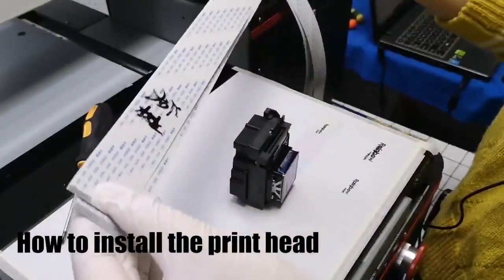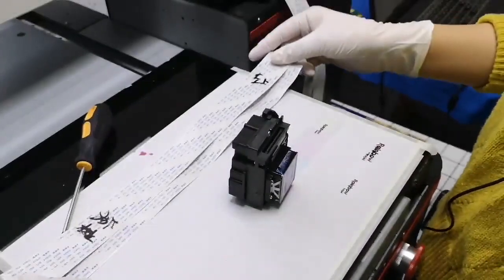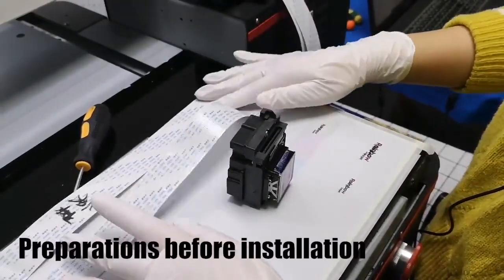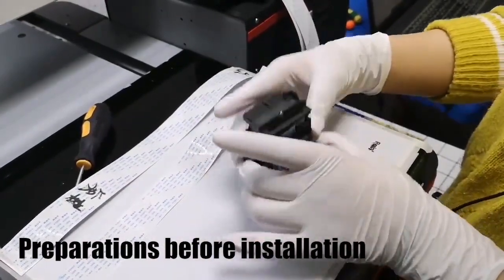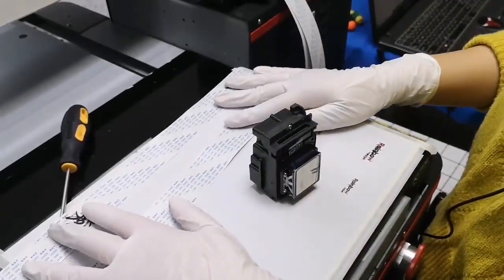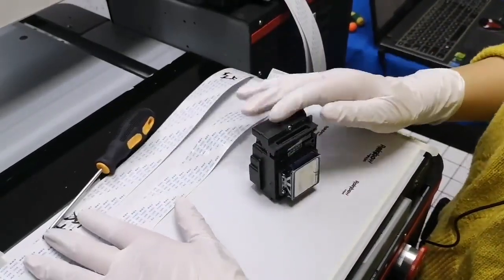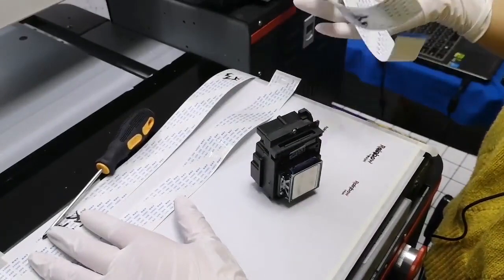Today we teach how to install the printhead. After you receive the machine, if you are a single-head printer, you will find one printhead and two cables. If you have two printheads, you will find two heads and four cables.